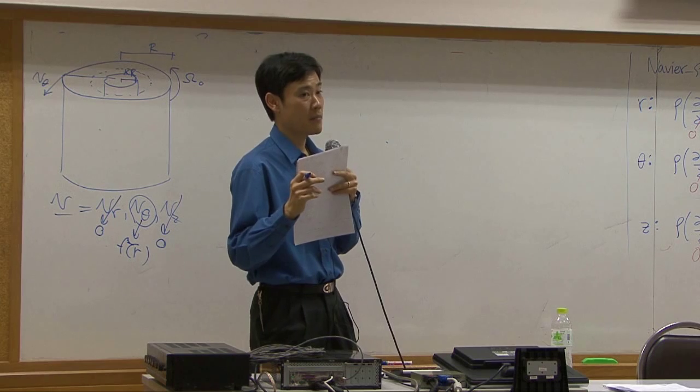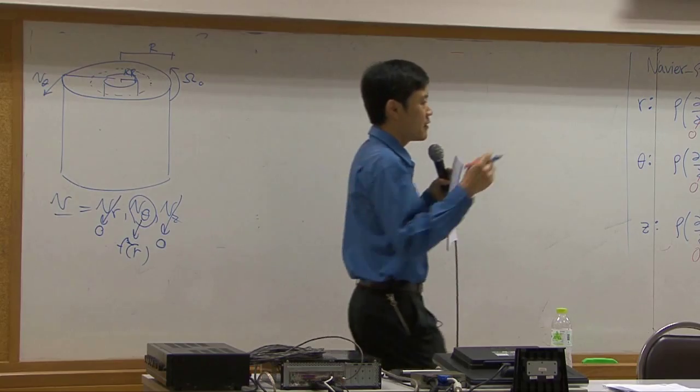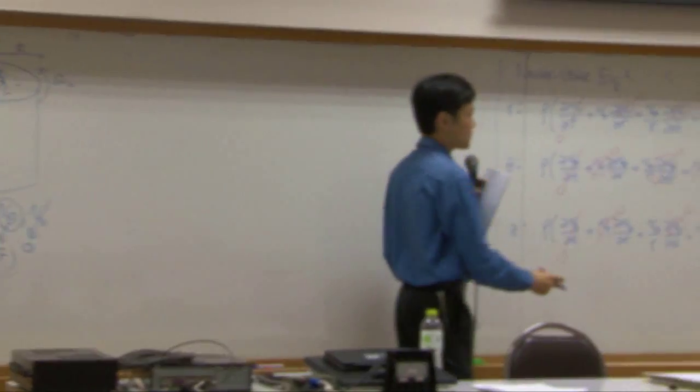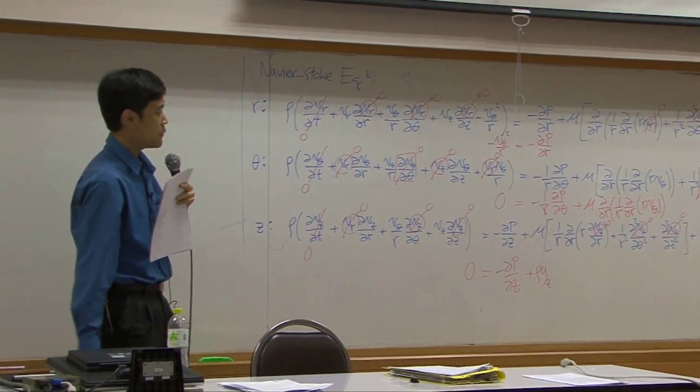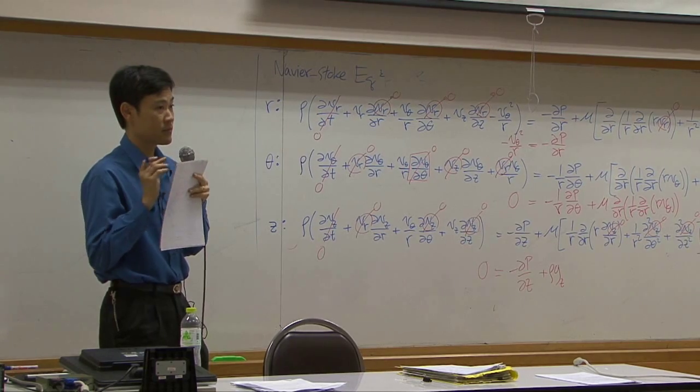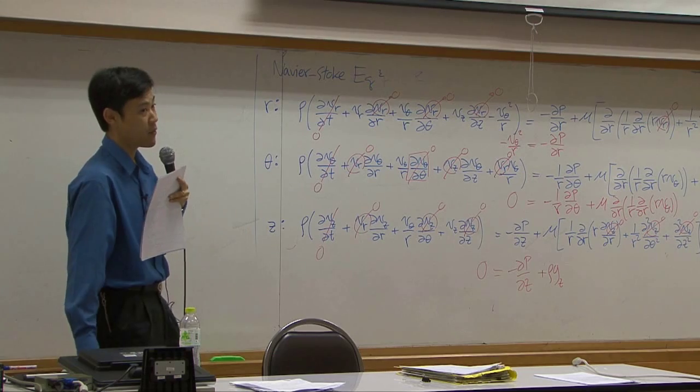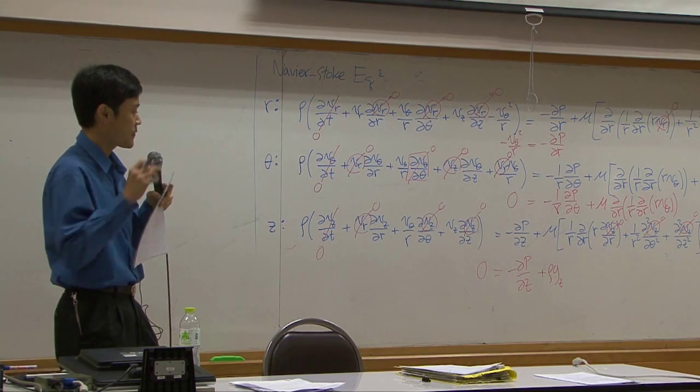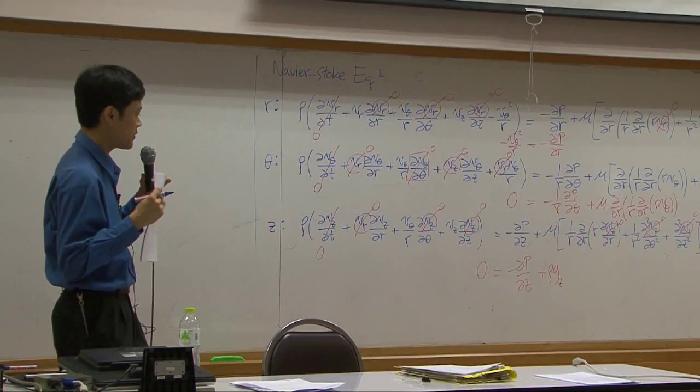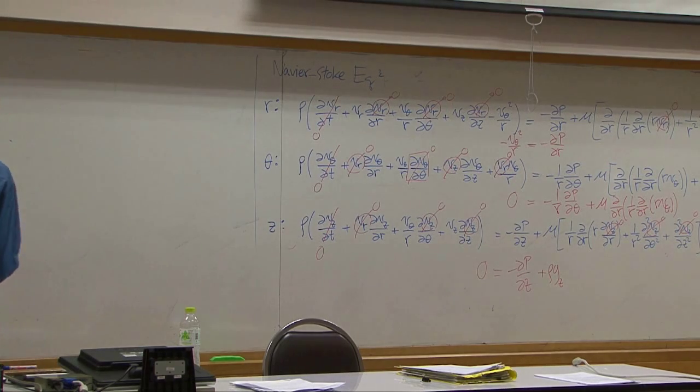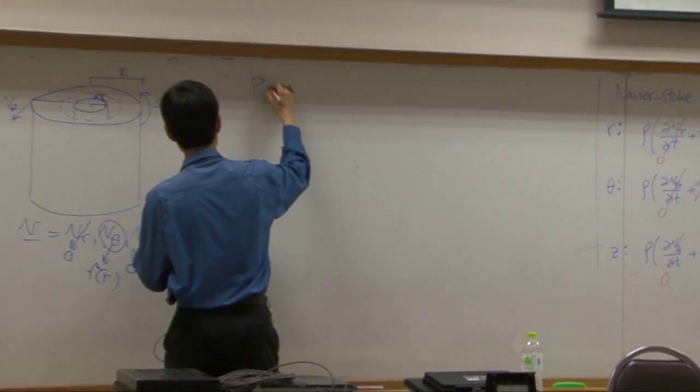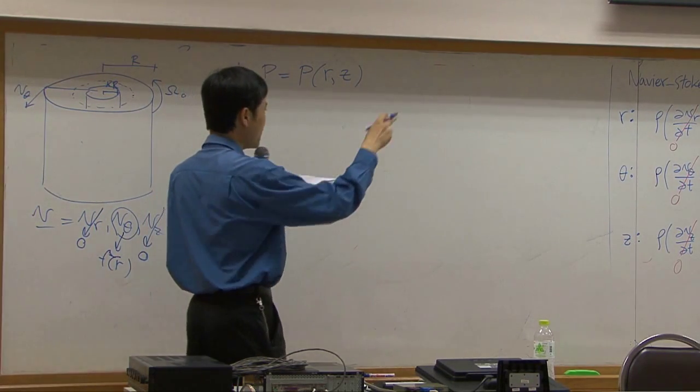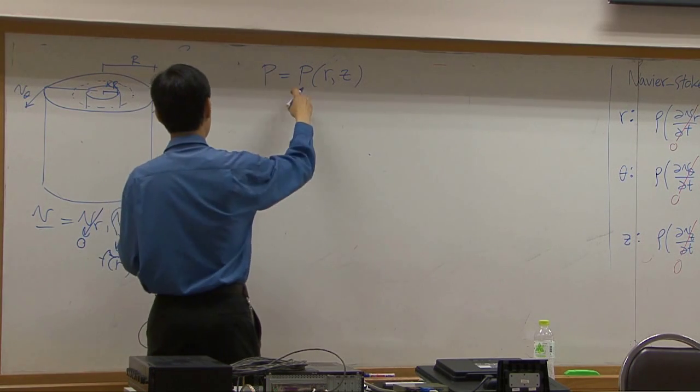Now just a little bit more from this example. The velocity profile was found from the zeta element. What about r and z elements if we want to use them? What will we get? If you integrate r component, you should get pressure as a function of r. If you integrate z component, you get pressure as function of z. You know that pressure itself is function of both r and z. You cannot integrate r and z individually because they're a function of two variables.